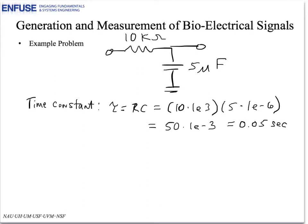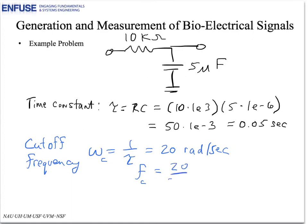Now, if we look at the cutoff frequency, omega, which is 1 over tau, that's going to be 20 radians per second, and the corresponding frequency, F sub C, would then be 20 over 2 pi hertz.